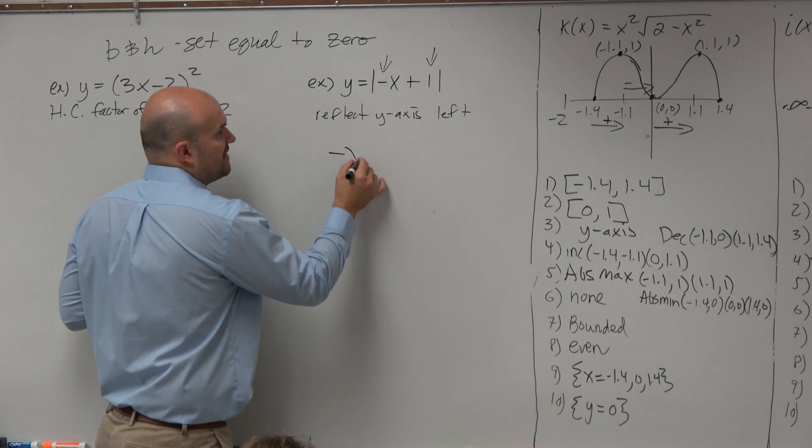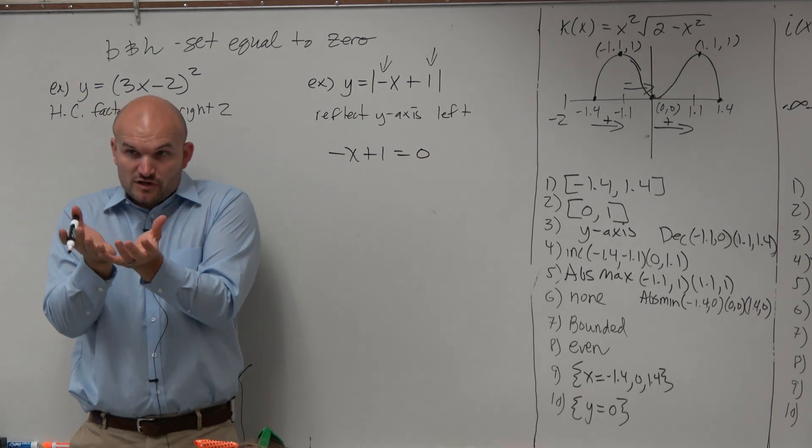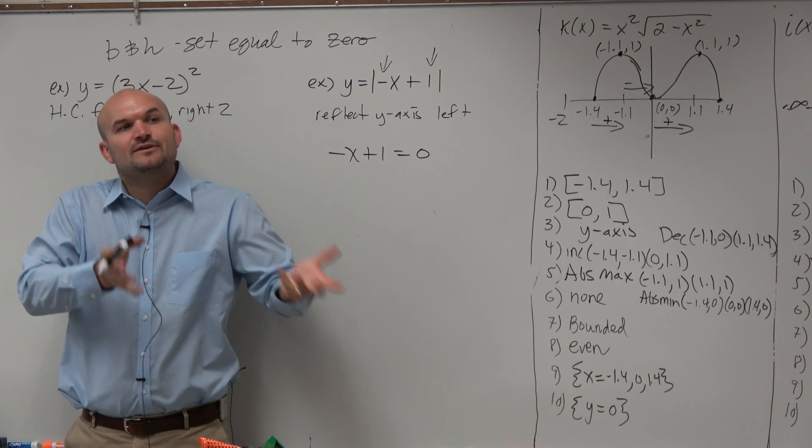So I'm going to say negative x plus 1 is equal to 0. Whatever's inside of your function, you're going to take that quantity and set it equal to 0.